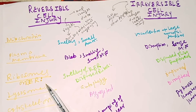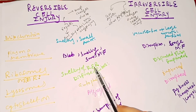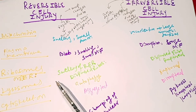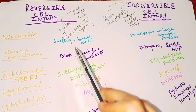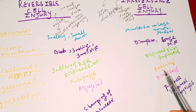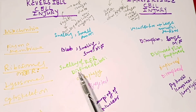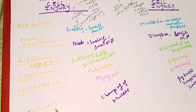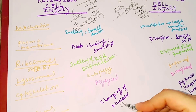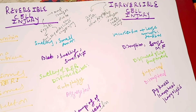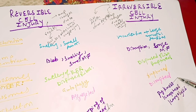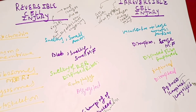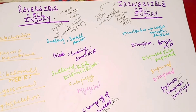In rough endoplasmic reticulum: reversible = swelling of RER + dispersion of ribosomes; irreversible = rupture of RER + dispersed ribosomes. In lysosomes: reversible = autophagy; irreversible = rupture with enzyme release causing further damage. Cytoskeleton: aggregated in reversible, disrupted in irreversible. Nucleus: clumping of nuclear chromatin in reversible; pyknosis (condensation), karyorrhexis (fragmentation), and karyolysis (dissolution of nuclear material) in irreversible cell injury. This concludes the differences between reversible and irreversible cell injury.